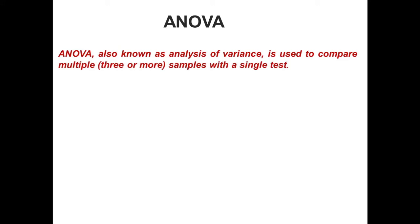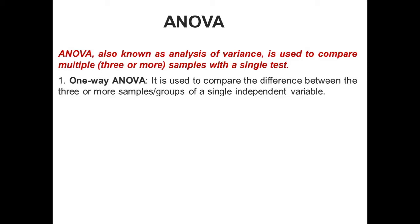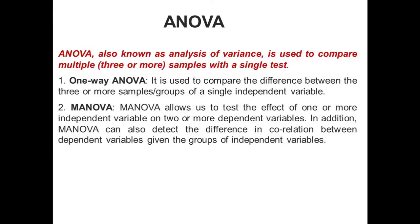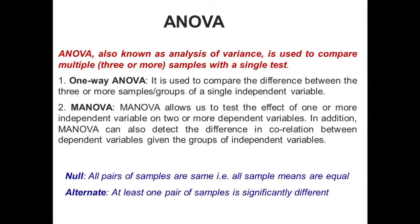ANOVA, also known as analysis of variance, is used to compare multiple means — three or more samples — with a single test. There are two major flavors of ANOVA. First, one-way ANOVA, which is used to compare the difference between three or more samples or groups of a single independent variable. Second, MANOVA, which allows us to test the effect of one or more independent variables on two or more dependent variables. In addition, MANOVA can also detect the difference in correlation between dependent variables given the groups of independent variables. The null hypothesis in ANOVA is that all pairs of samples are the same, i.e., all sample means are equal. Whereas in the alternate hypothesis, at least one pair of samples is significantly different.